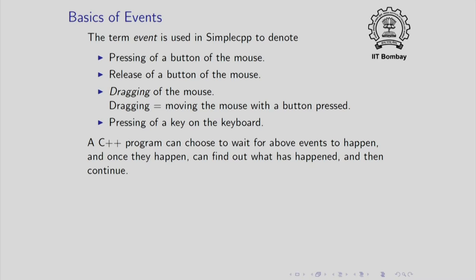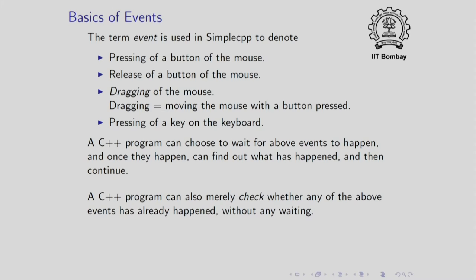A C++ program can choose to wait for all of these events. Once one such event happens, the program resumes and can find out what event has happened and accordingly take action. Instead of waiting for an event, a C++ program can also query whether any event has happened. Notice that checking does not involve any waiting whatsoever — it is asking at the point of checking whether some event has already happened.